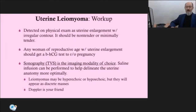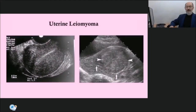Leiomyomas are often detected by pelvic examination with findings of uterine enlargement or irregular contour. In reproductive-aged women, uterine enlargement prompts measurement of a urine or serum beta-hCG level. Sonography is initially done to define pelvic anatomy. Transvaginal sonography provides superior resolution, but some uteri are so large that transabdominal sonography is needed to image the entire corpus. The sonographic appearance of leiomyomas ranges from hypo- to hyperechoic depending on the ratio of smooth muscle to connective tissue and whether there is degeneration.